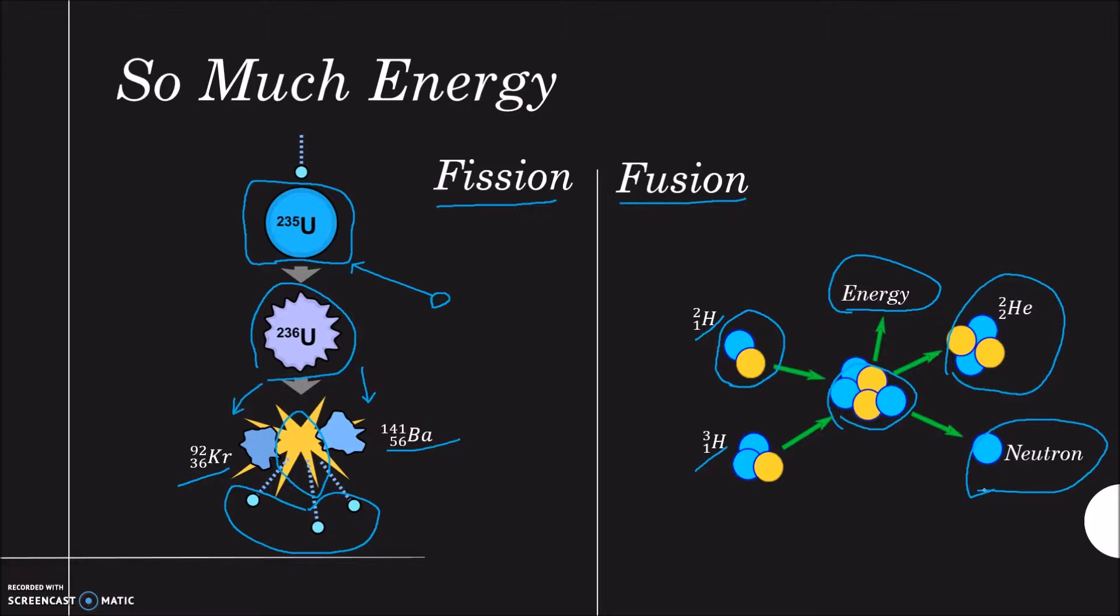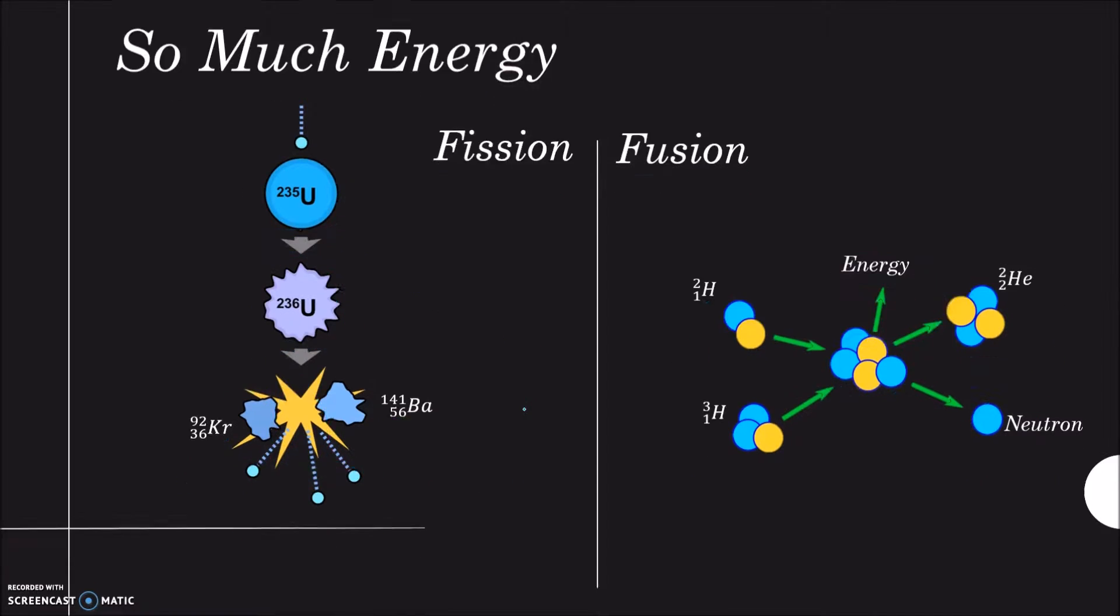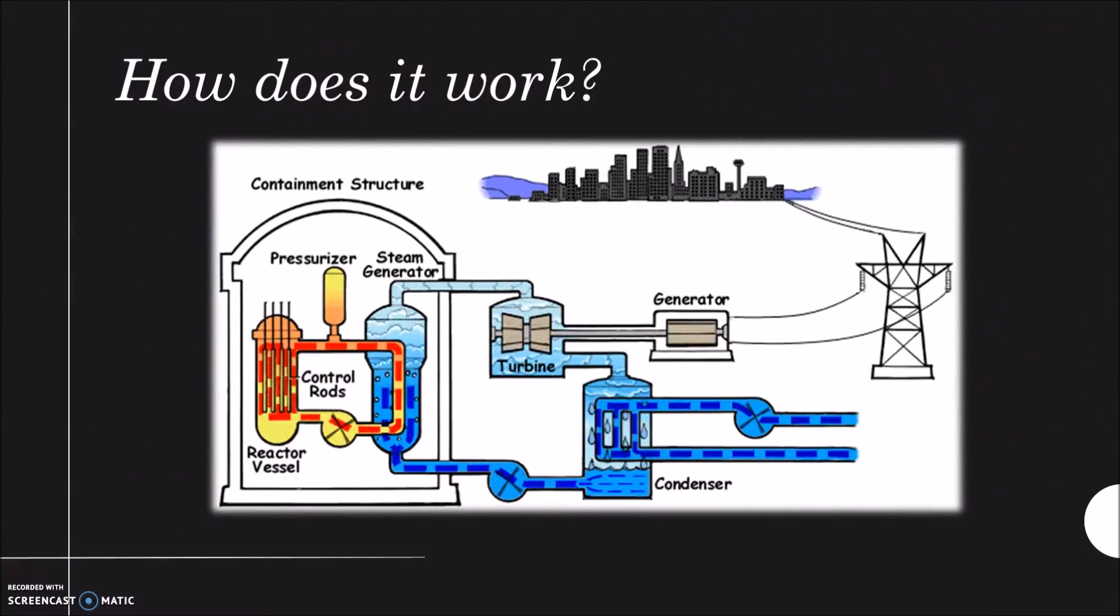So the question is, how is energy accumulated if in both cases it is produced as heat? The most common type of reactor is called a pressurized water reactor. A nuclear reaction happens in this area, and as we learned, it produces a lot of heat.